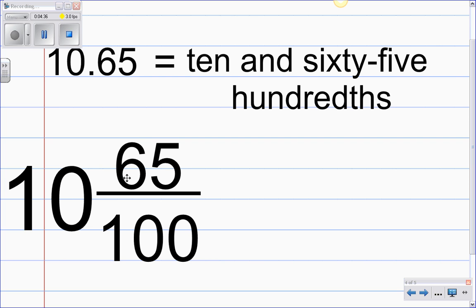Now just as we did before, we can still reduce this fraction. So what we need to do is to go ahead and bring our 10 over. Because when we reduce fractions, we leave the whole numbers alone. We're just reducing the fraction. Not the whole number. So now we're looking at the 65 over 100.